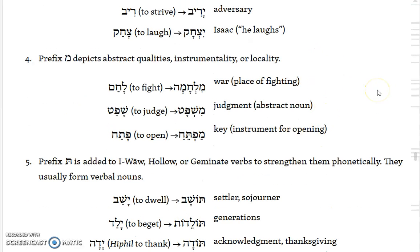A prefix mem depicts abstract qualities, instrumentality, or locality. So you have the verb lacham, which in the nifal means 'to fight,' but then you get a noun form with a prefix mem and a feminine ending kamats-he: milhamah, which is 'war,' literally 'a place of fighting.' Then you have shafat, 'judge,' but then mishpat, which is 'judgment' — in this case an abstraction. Or you have patach, 'to open,' and then the noun form mifteach, which is 'key' — an instrument for opening.